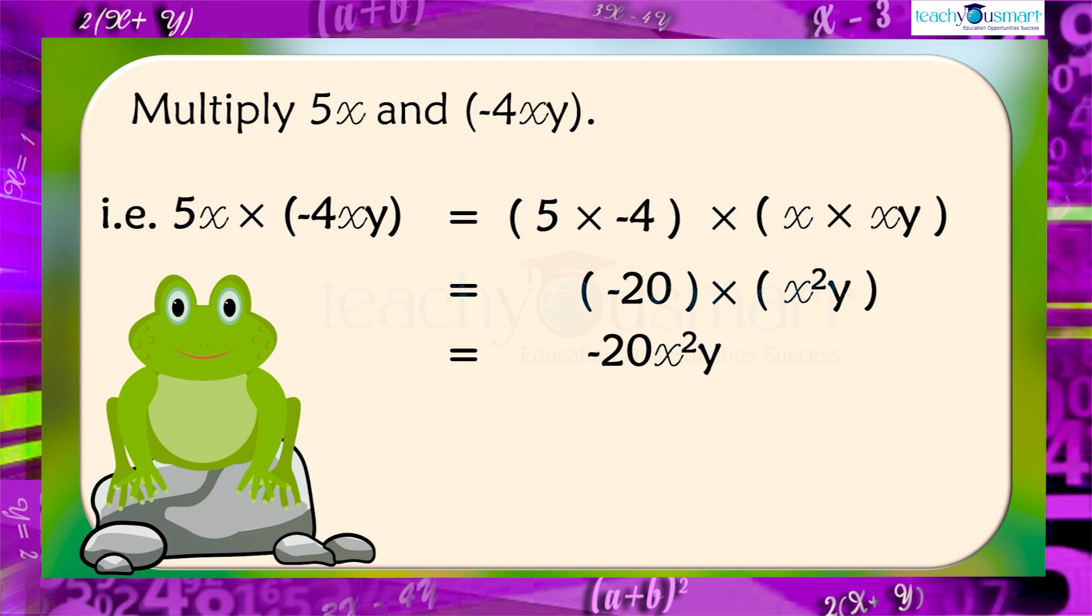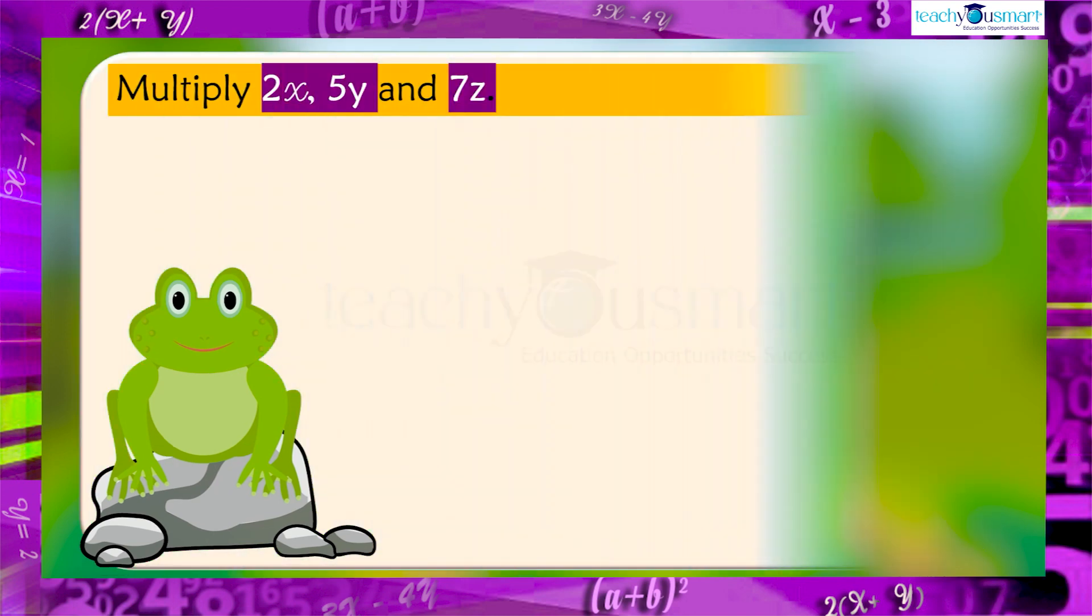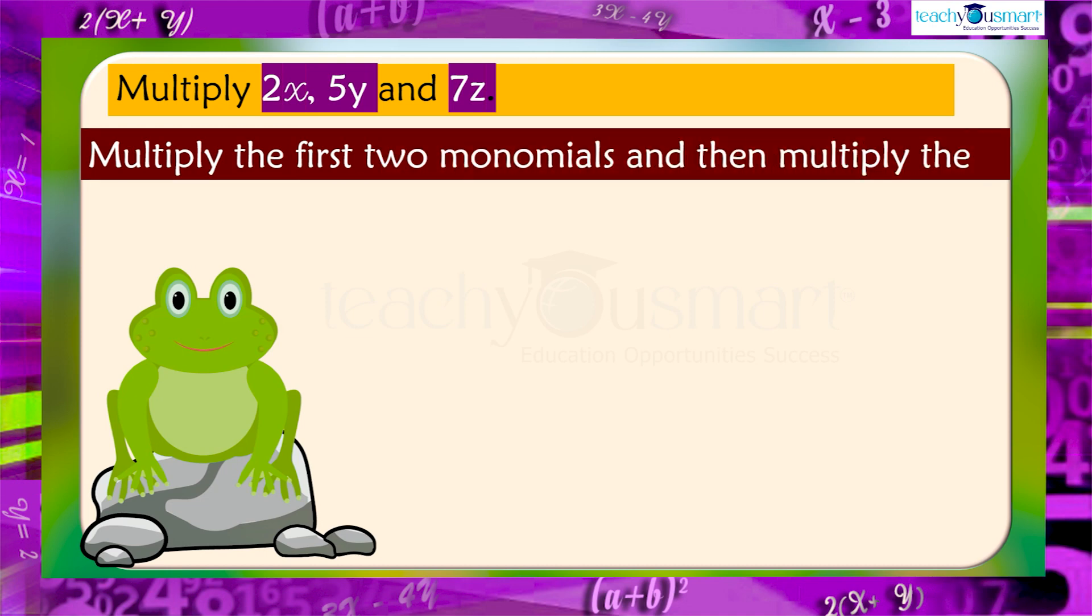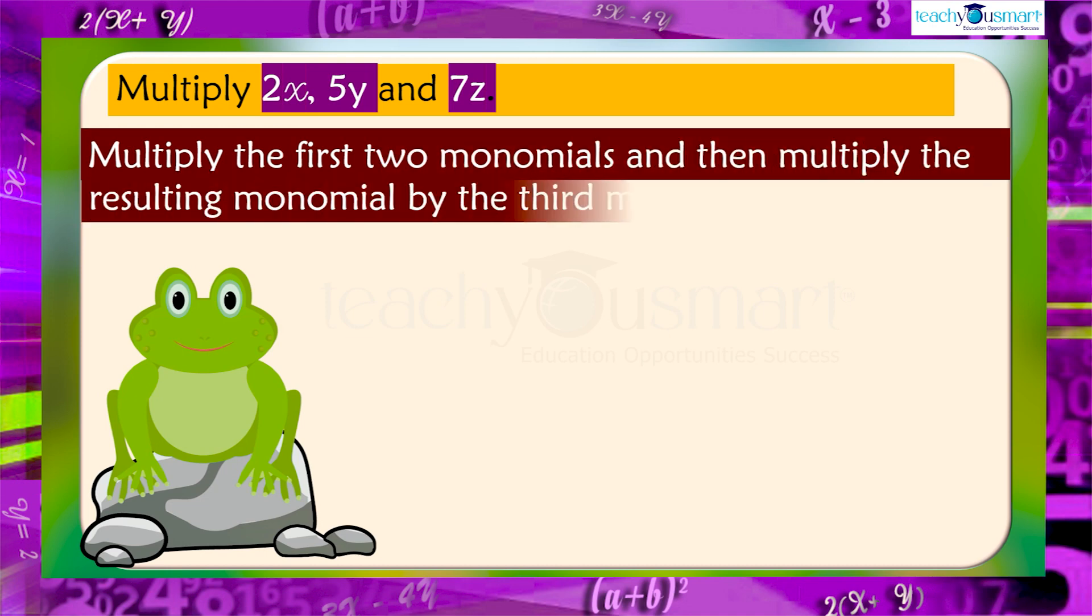Similarly, we can multiply 3 or more monomials. Multiply 2X, 5Y and 7Z. We can multiply these monomials in two ways. In the first way, multiply the first two monomials, and then multiply the resulting monomial to the third monomial.